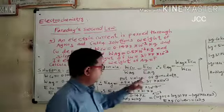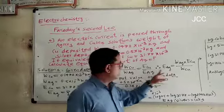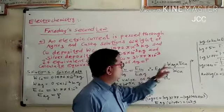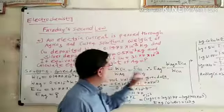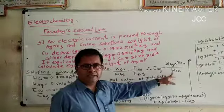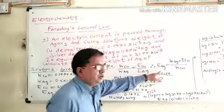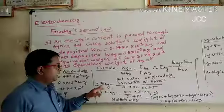This is the formula for EAg. The EAg equals - we have to multiply WAg into ECu, divided by WCu. What is EAg?